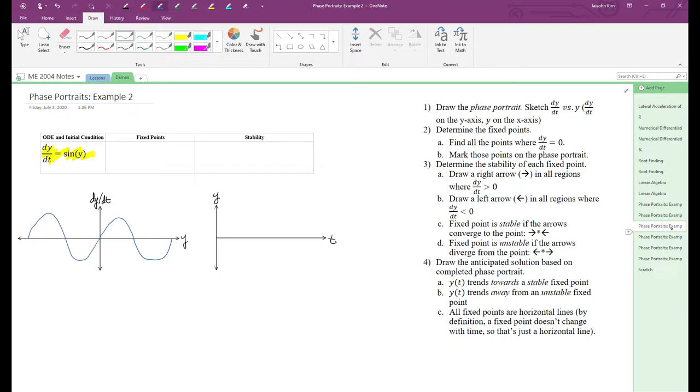Next, we find the fixed points. The sine function has roots at integer multiples of π, so from negative 2π to 2π, we have 5 roots.